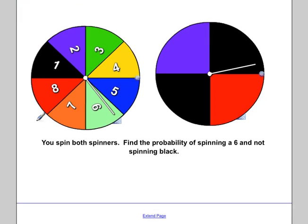All right, for this question, you spin both spinners, find the probability of spinning a six and not spinning a black. So this first spinner we're going to spin, we're trying to get a six. So how many sixes are in this spinner? Well, there's only one. So it's one out of eight. And find the probability of not spinning a black on the second one. So how many are not black? Well, there's a purple and a red. That's two out of four. And then you're just going to multiply these two fractions together.